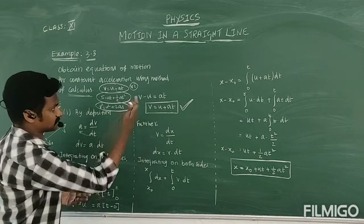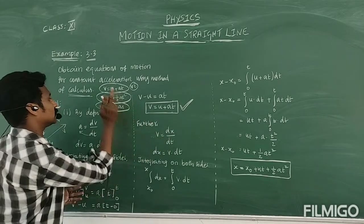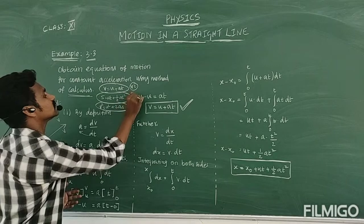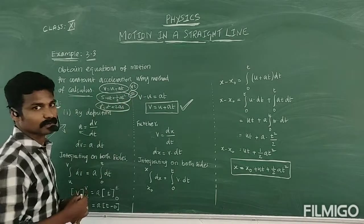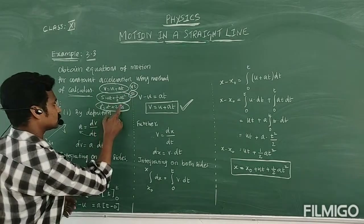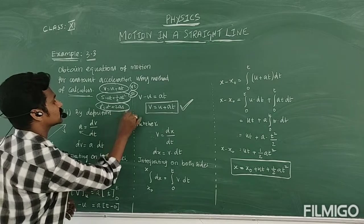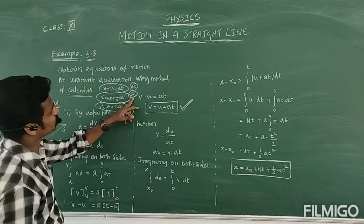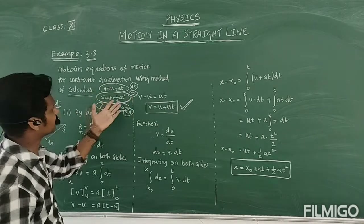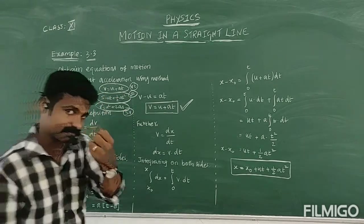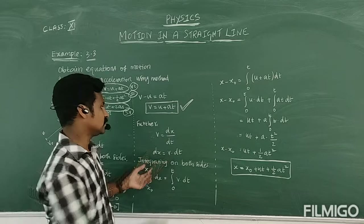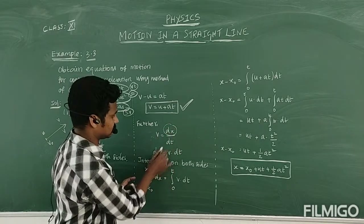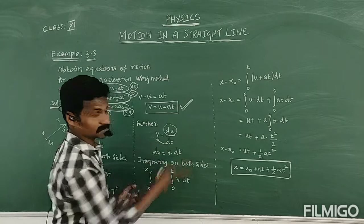So this is the relationship between velocity and time. We have the velocity-time relation. Then we look at the position and time relation. Position means DX is involved. So DX is equal to velocity into DT.